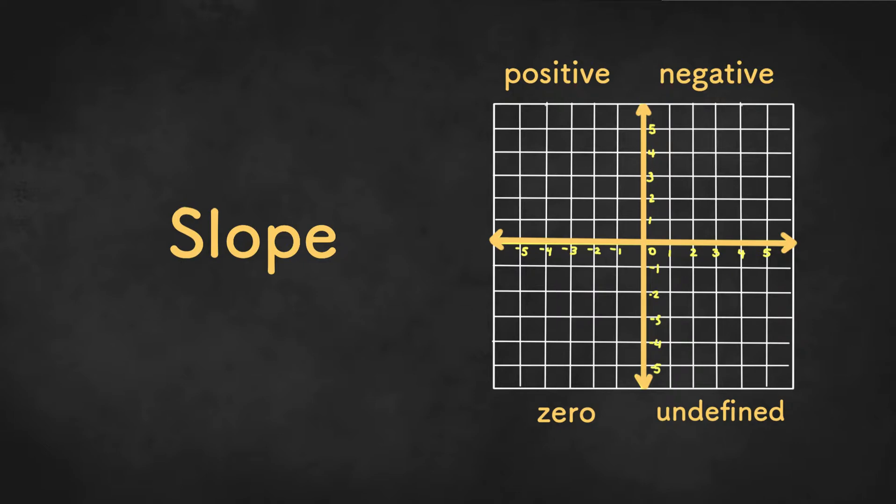Positive, negative, zero, and undefined. So positive slope will look something like this, an uphill line. And then negative slope is the opposite. It'll look something like this, more of a downhill line.